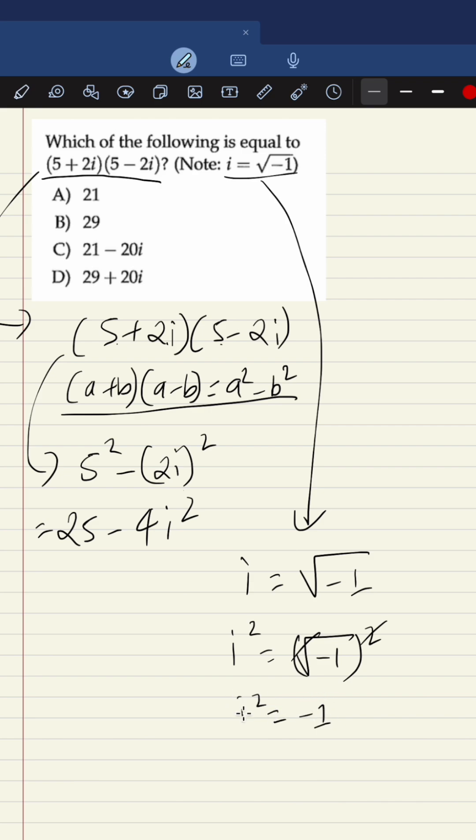So it will be 25 - 4(-1). Minus times minus will be positive, and 4 times 1 is 4, so 25 + 4 is 29. Option B is our answer.